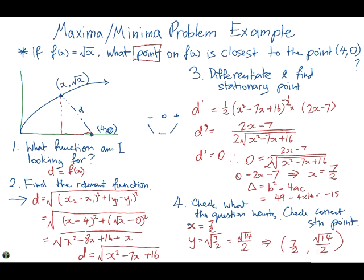So yeah, there it is. All maximum-minimum problems are solved this way. Look for and find what function you're looking for, find the relevant function from the question, and then differentiate it, find a stationary point, and then go back to the question. Check whether that's exactly what the question wants, and also just double check that you have the correct kind of stationary point. Hope you've enjoyed yourself. I'll see you next time.